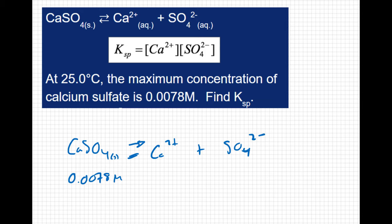If my calcium sulfate is 0.0078 molar, I know my calcium is also going to be 0.0078 molar. And my sulfate is also going to be 0.0078 molar. I can plug these numbers into this equilibrium expression.